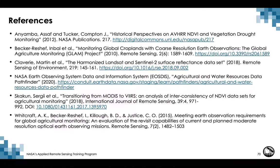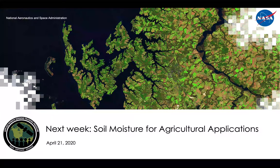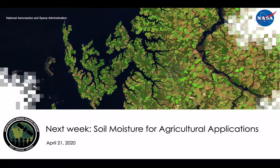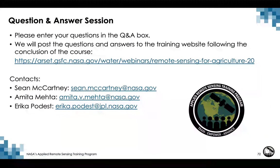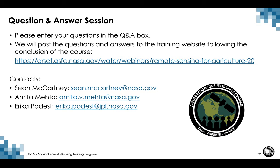Included are some references to learn more about satellite remote sensing for agricultural applications. Next Tuesday, April 21st, Erica Potist and Amita Mehta will lead the webinar on soil moisture for agricultural applications. As a reminder, the homework assignment for Part 1 is available on the ARSET web page and must be submitted via Google Form by April 28th. This concludes the presentation portion of this webinar; we will now transition to the question and answer session.